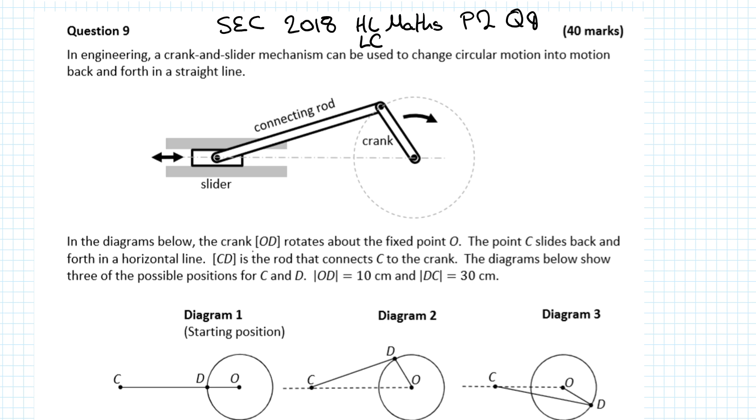In the diagram below, crank OD rotates about the fixed point O. The point C slides back and forth in a horizontal line. CD is the rod that connects C to the crank. The diagrams show three of the possible positions for C and D. Let's note what actually is happening here and what it looks like.